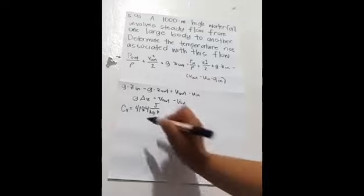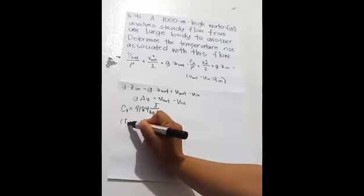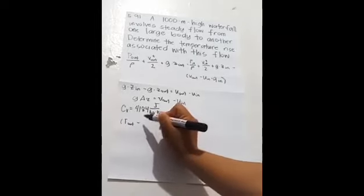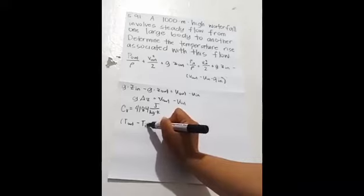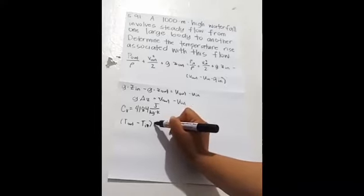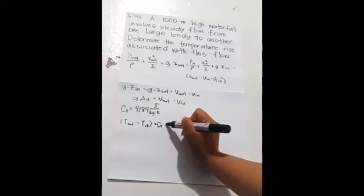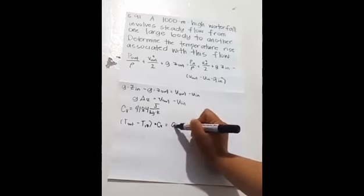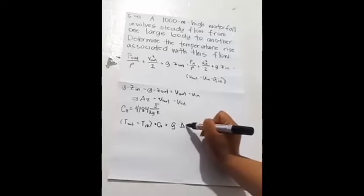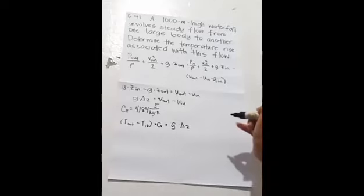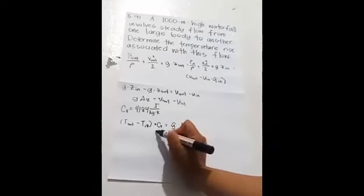So therefore, the equation becomes T out minus T in times C is equal to G times change of Z.